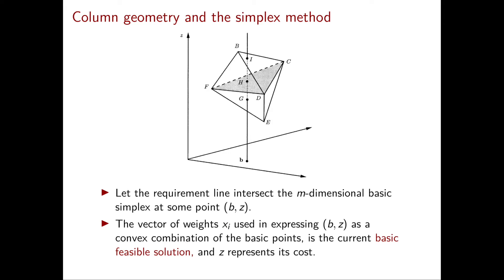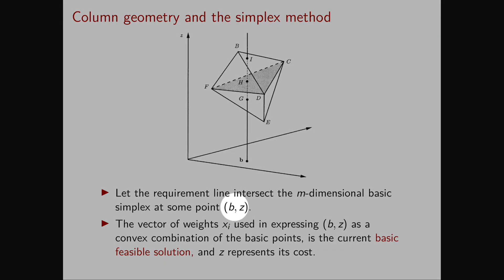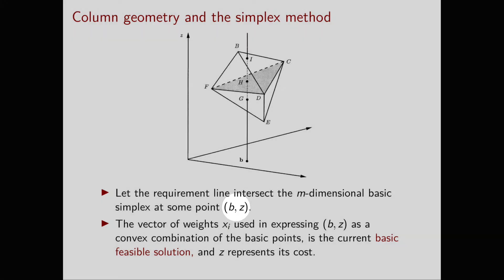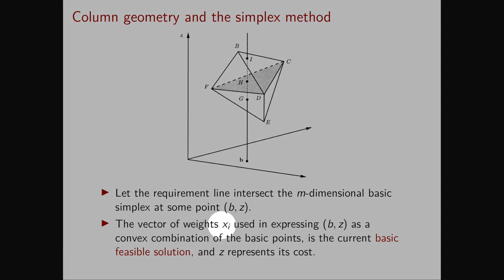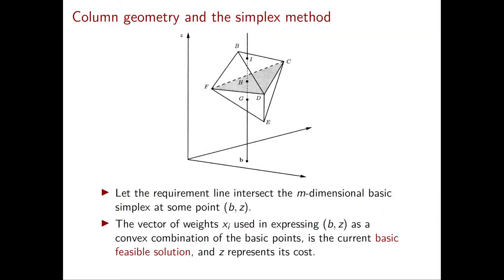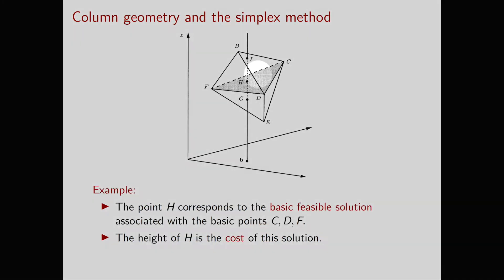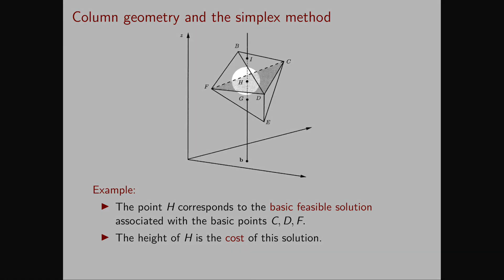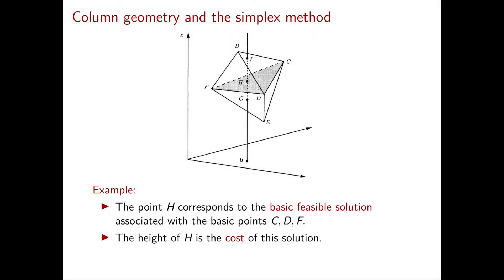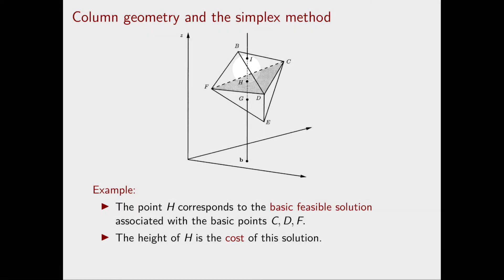Now let's assume that the requirement line intersects the m-dimensional basic simplex. The intersection will be of the form b,z for some z, meaning this vector b,z can be written as a convex combination of the vectors ai,ci. The current basic feasible solution corresponds to the weights xi used in expressing b,z as a convex combination of the basic points, and the cost of such a basic feasible solution will be exactly z. In the picture, the basic simplex c,d,f intersects the requirement line at point h, whose height represents the cost of the solution.